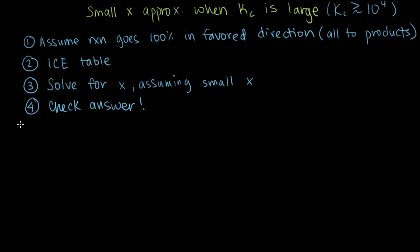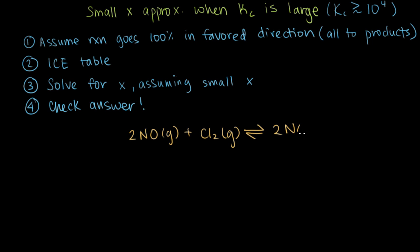In this video we're going to go through an example problem. The example is the reaction of NO gas reacting with chlorine gas to make 2NOCl gas. This particular reaction has a K value equal to 6.25 times 10 to the fourth, which is indeed on the order of 10 to the fourth, so we should be able to use the small x approximation.